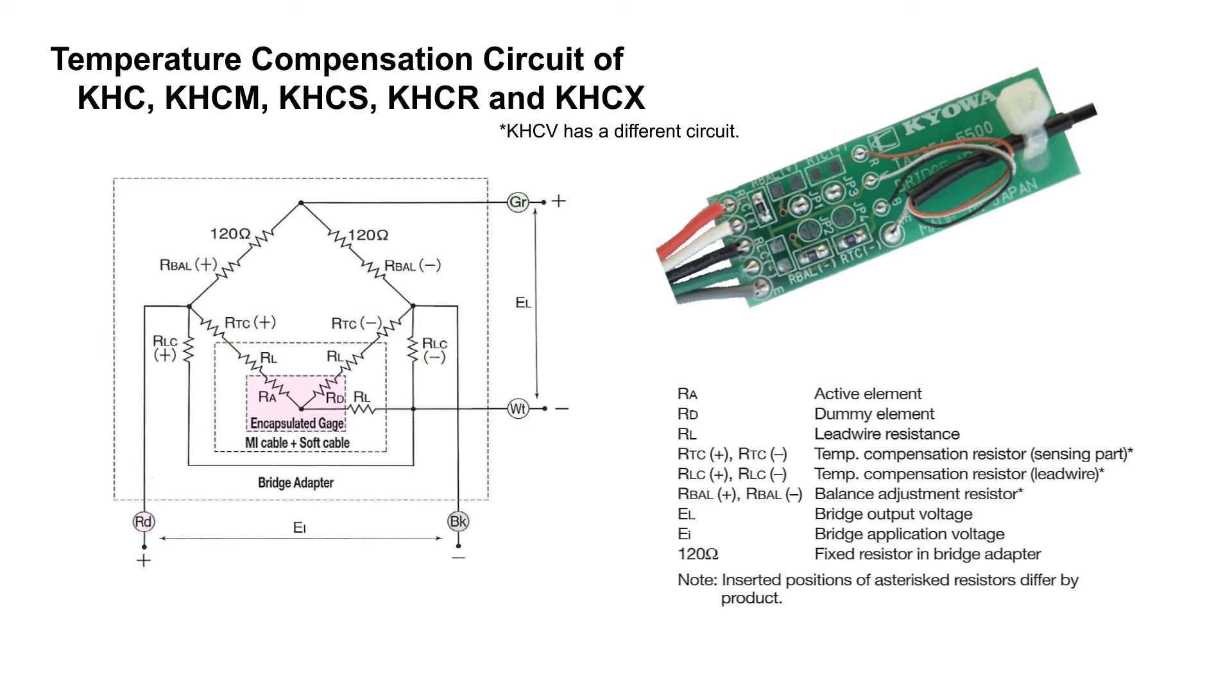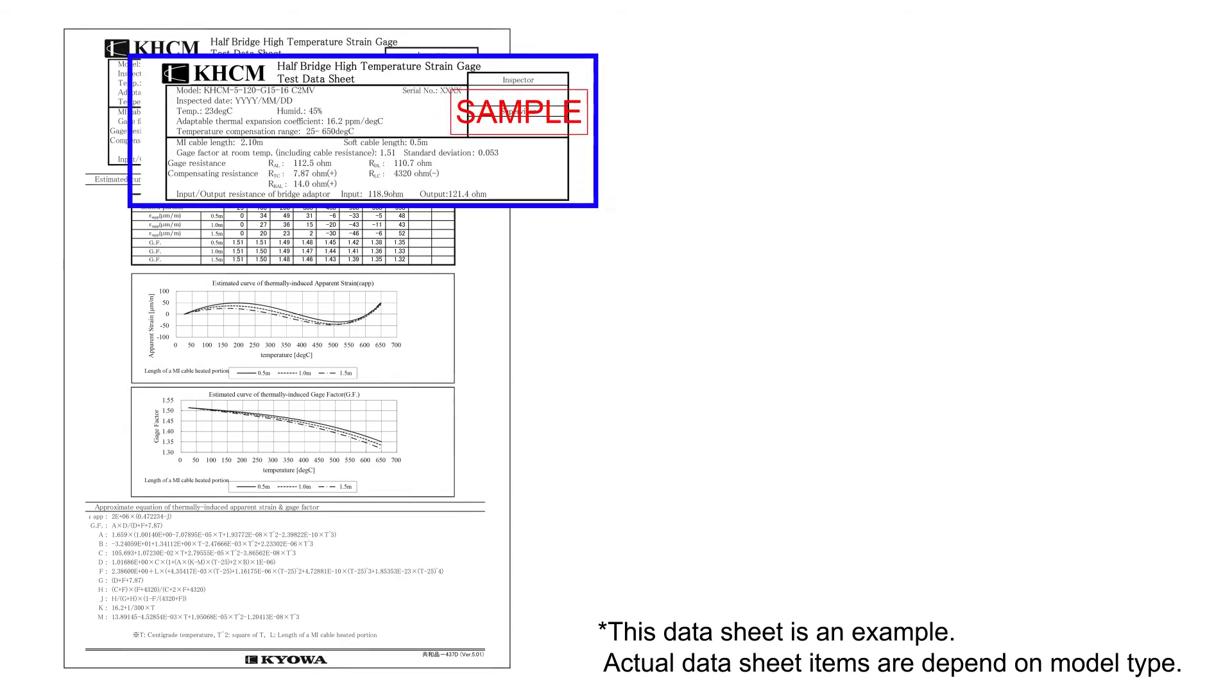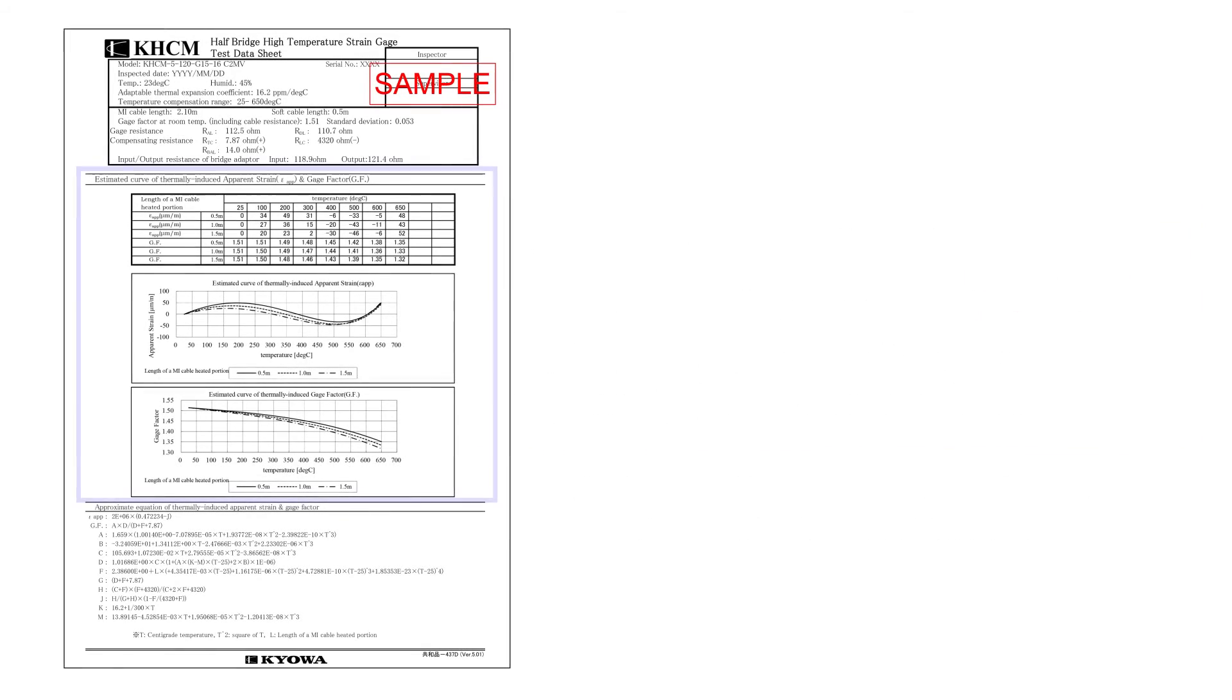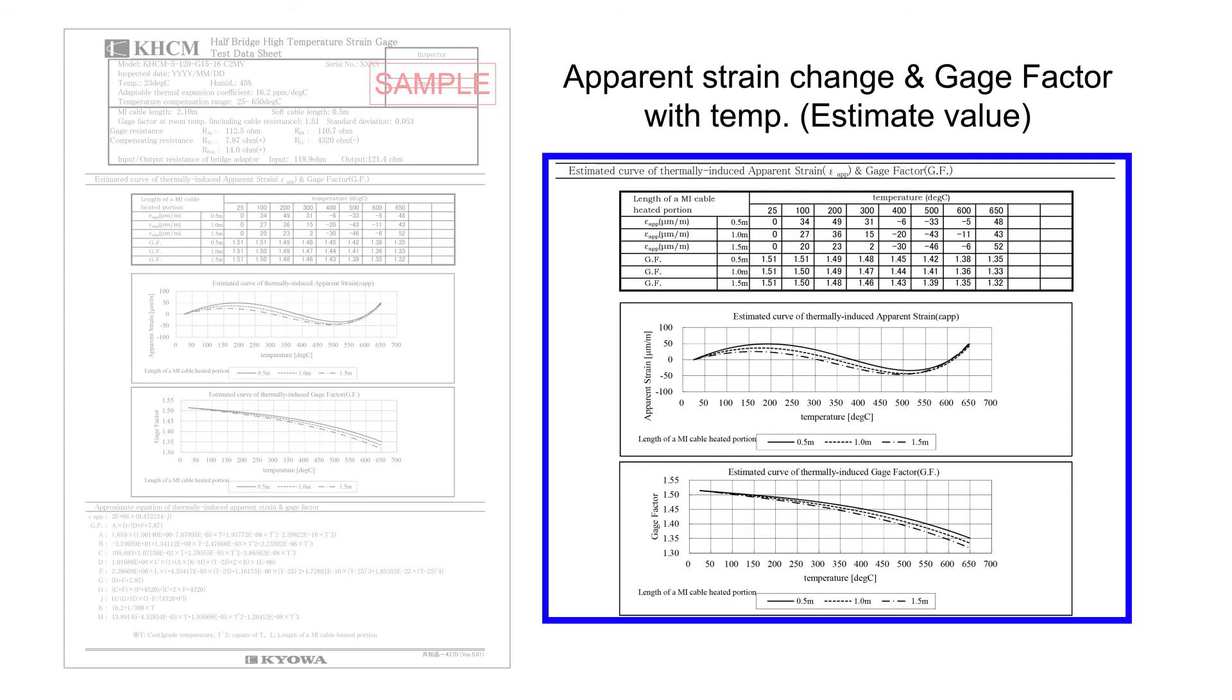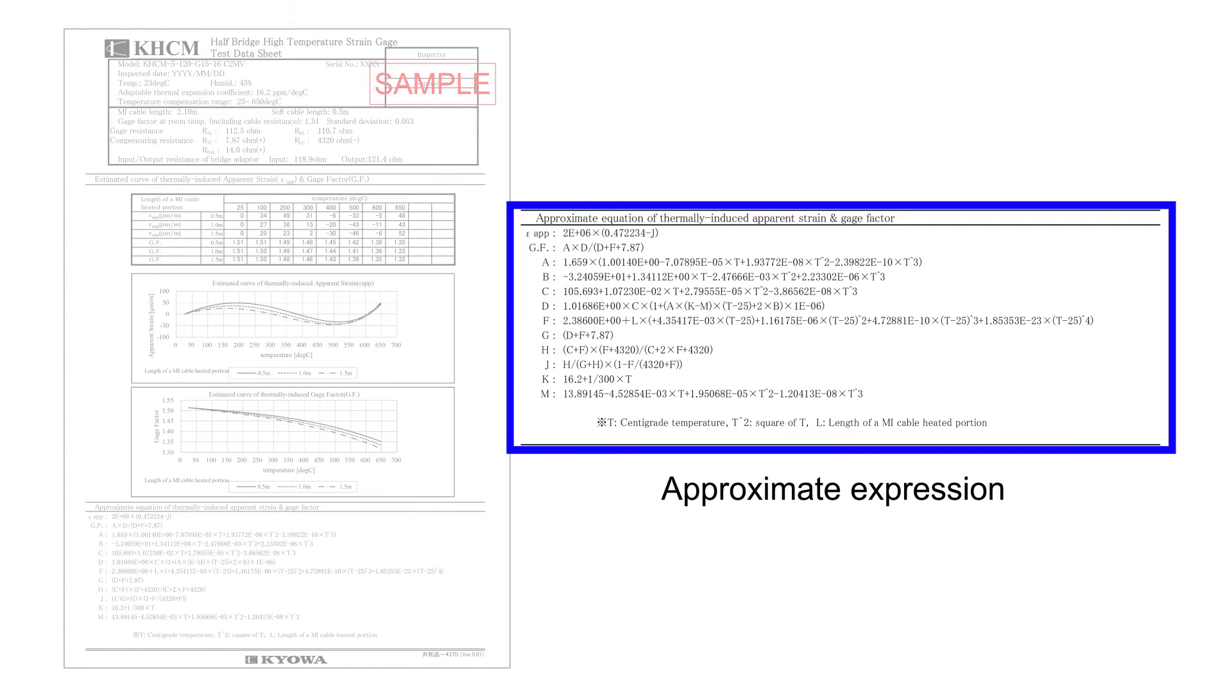The bridge adapter helps to balance the bridge and complete the temperature compensation circuit. The test data sheet is included with every gauge. At the top we have the overview of model and range compensation along with gauge factor and resistance of the bridge. The middle is a graph of the apparent strain induced by temperature over the operating range. At the bottom we have the quadrilateral equation coefficients to allow temperature compensation calculations.